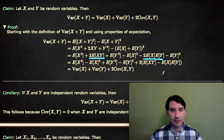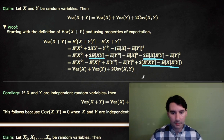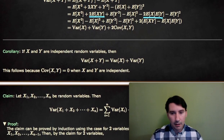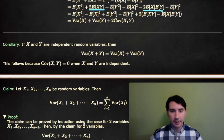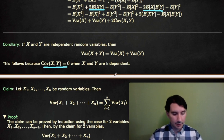So this was all done just by rearranging the formula for the variance of X plus Y, using the formula for covariance. It follows that if X and Y are independent, then the variance of X plus Y equals the variance of X plus the variance of Y, because the covariance of X and Y is 0 when X and Y are independent.